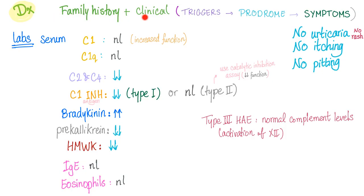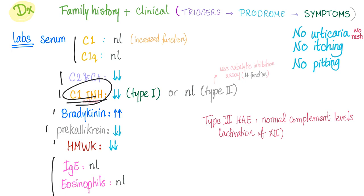Lab results in hereditary angioedema: C1 normal, C2 decreased, C1 inhibitor decreased, bradykinin high, pre-kallikrein low, high molecular weight kininogen low. IgE and eosinophils are normal because it's not an allergy.